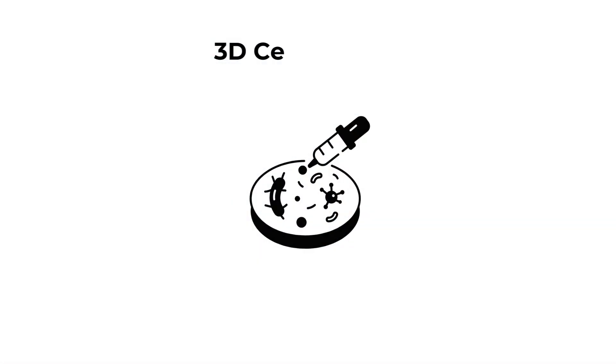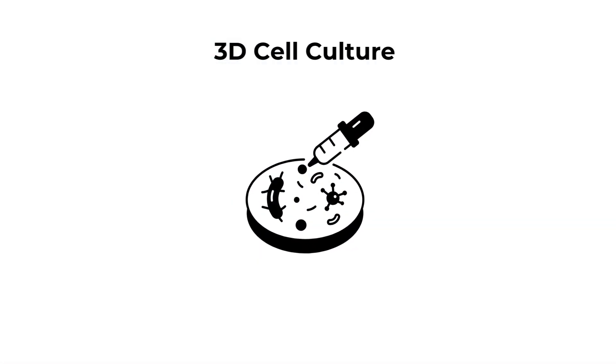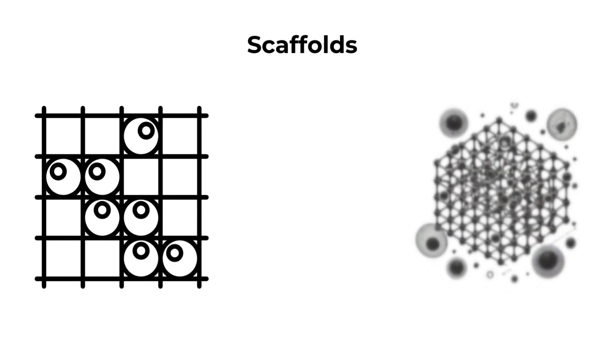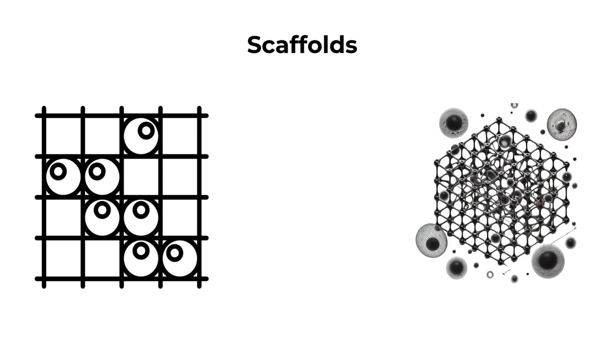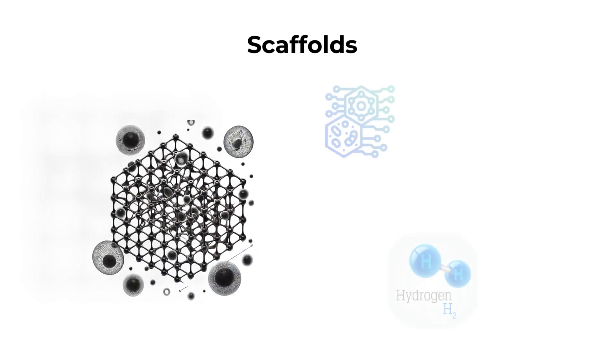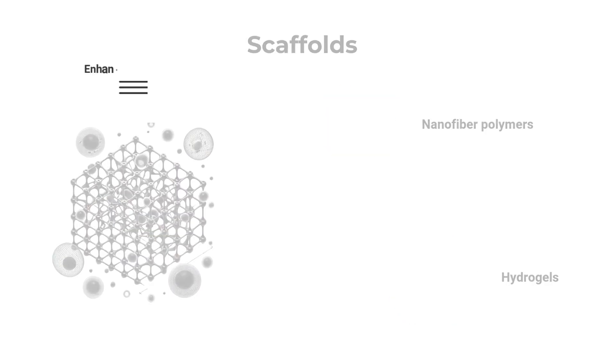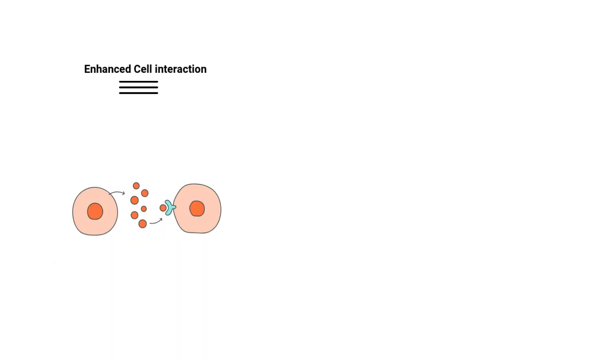One prominent example of 3D cell culture technology is the use of scaffolds that support cells within a three-dimensional matrix. These scaffolds, which can include materials like nanofiber polymers and hydrogels, provide a more natural growth environment that enhances cell interaction and behavior.